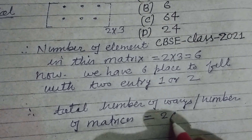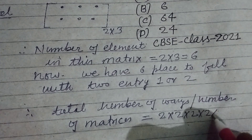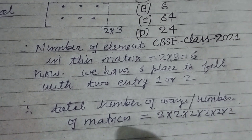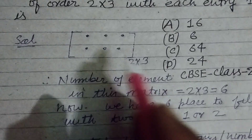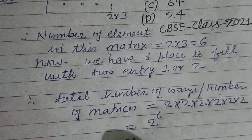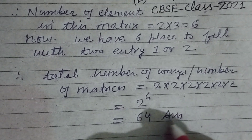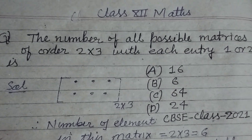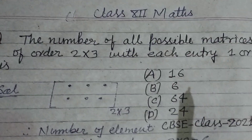is 2 into 2 into 2 into 2 into 2 into 2 — that is, 2 multiplied 6 times (positions 1 through 6). So 2 numbers can be entered at 6 places by 2 to the power 6, and this is 64. So 64 is the number of matrices formed by a 2 by 3 matrix with entries 1 or 2.